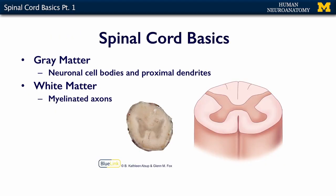The basic setup of your spinal cord is gray matter and white matter. Your gray matter is where the neuronal cell bodies live and their proximal dendrites, and the white matter is where the myelinated fiber tracts are. On this image, this is the gray matter — we call it in the spinal cord our 'gray butterfly.' Your spinal cord really is only about the size of your thumb. Out in this area is the white matter, which is white because it's myelinated, so it contains quite a bit of lipid, and that looks white in a gross preparation.